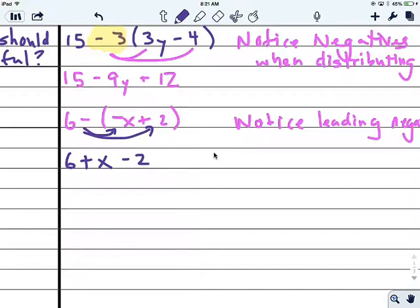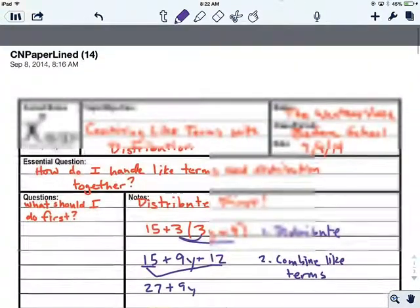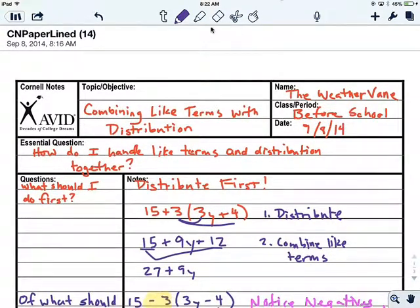If you were to finish these problems, you'd get 27 minus 9y. And here you'd end up with 4 plus x. So it's going to be the same set of steps every single time: distribute and then combine like terms. But you do have to play with some negatives and deal with that a little bit. So just be careful when you're doing the exercises. Good luck. And also make sure that you write a summary here that answers the essential question: How do I handle like terms and distribution together?